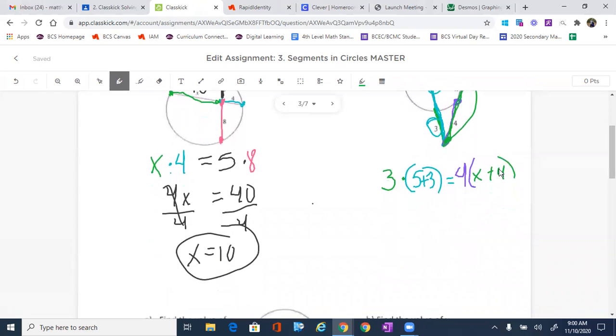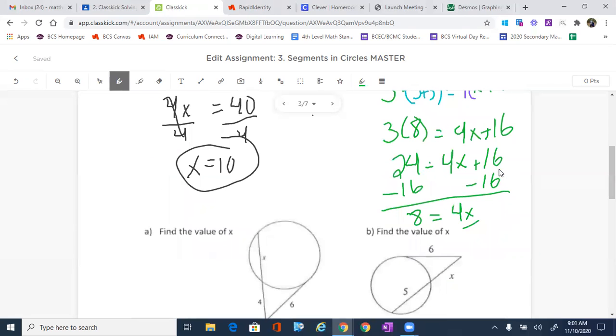Once we do that, it's just simple arithmetic there. So three, five plus three is eight, equals to four x plus 16. I can distribute that if I want to, we don't have to do it that way. 24 equals to four x plus 16. Subtract the 16 out. Left with eight equals to four x. And what we're going to do is divide by four, giving us x equals to two. Okay.